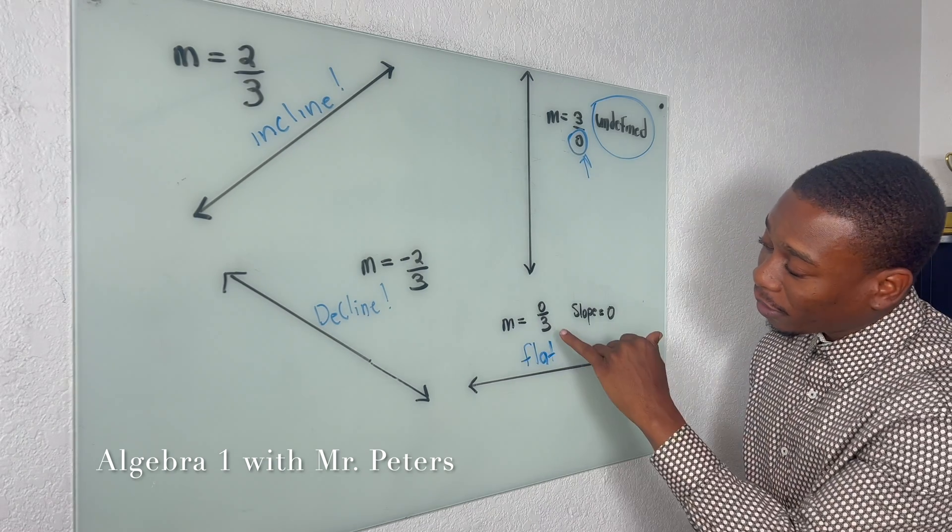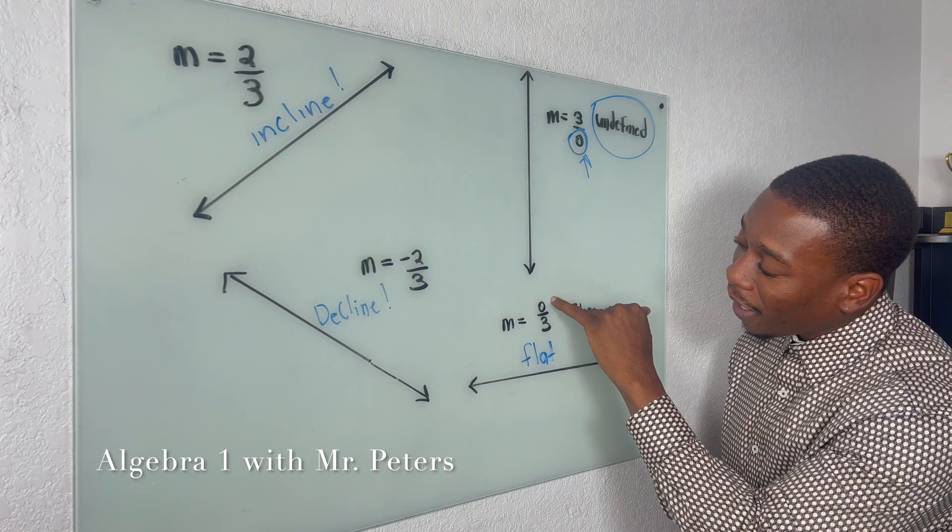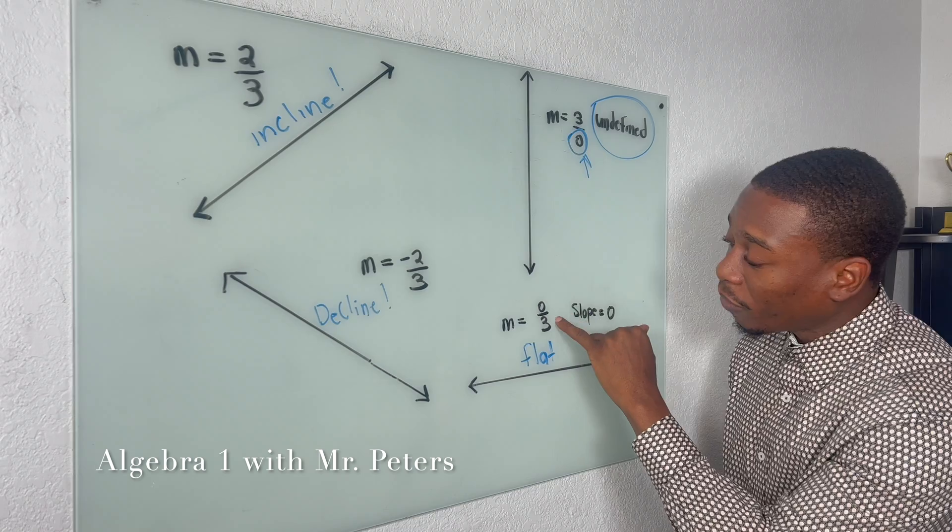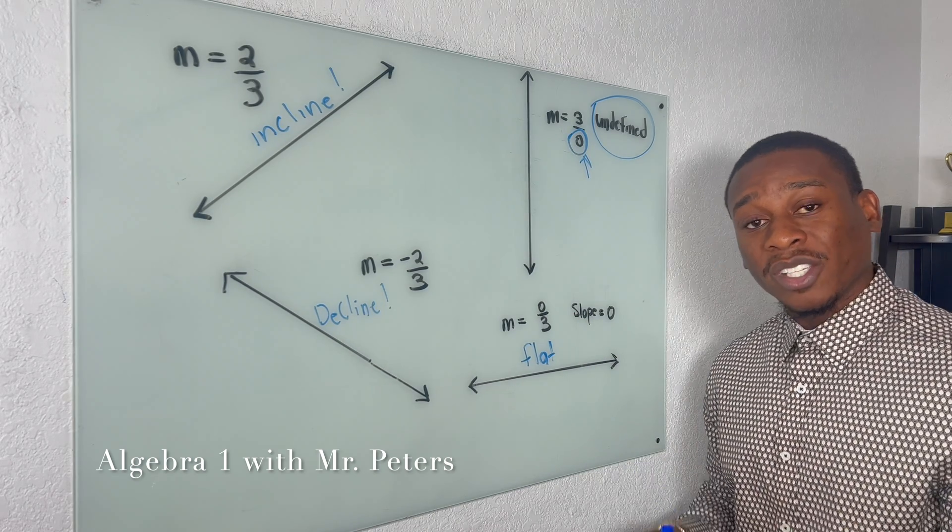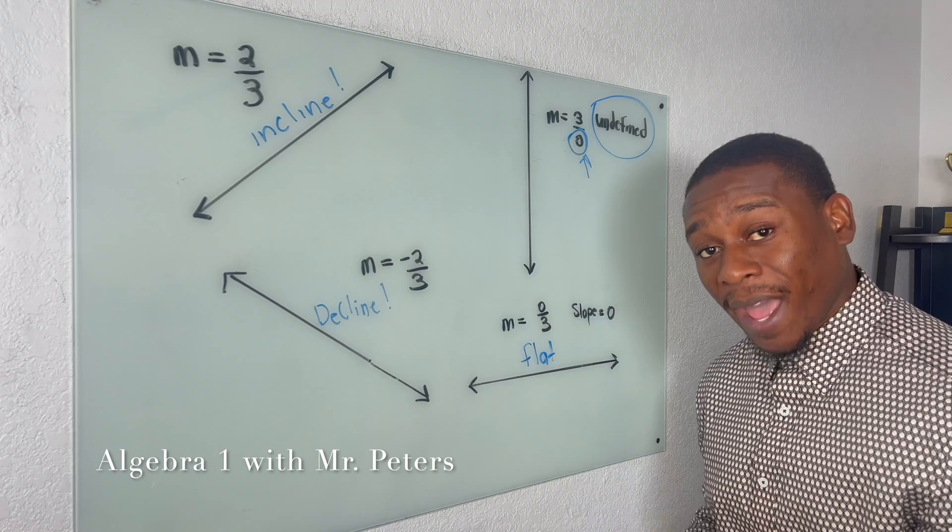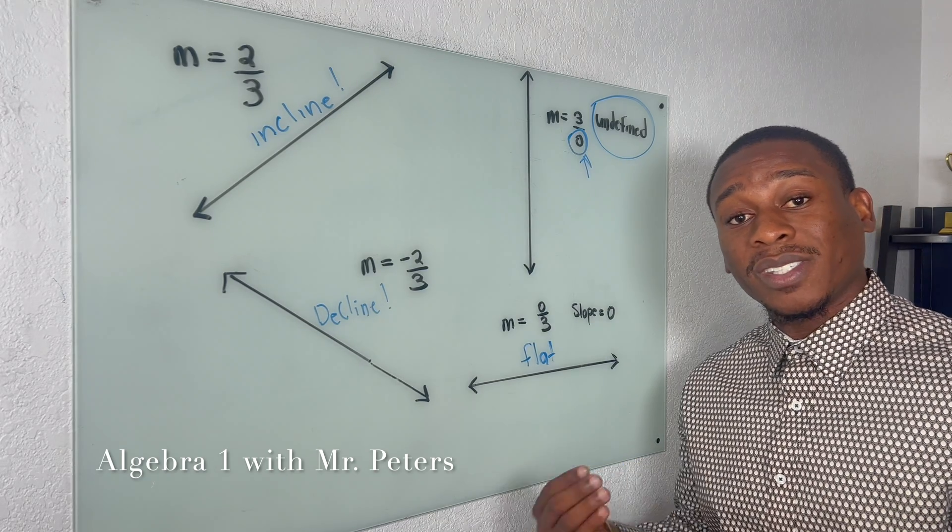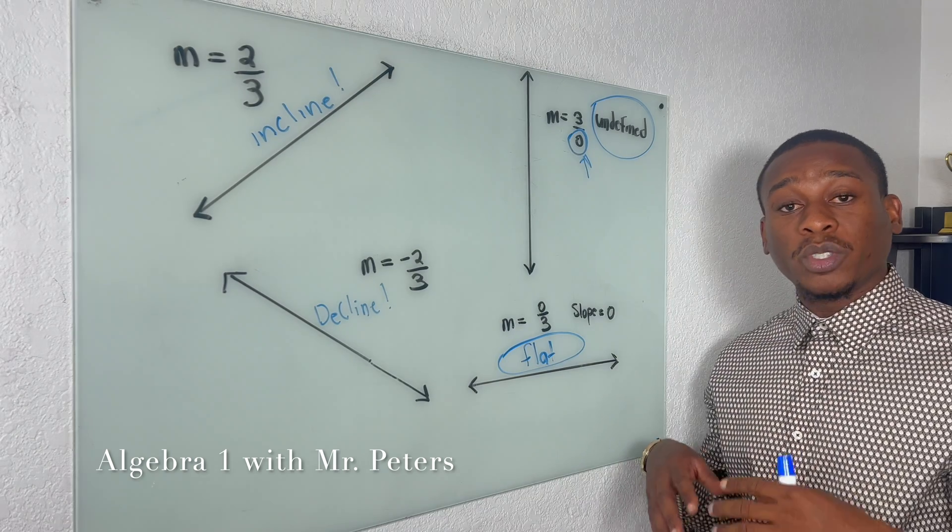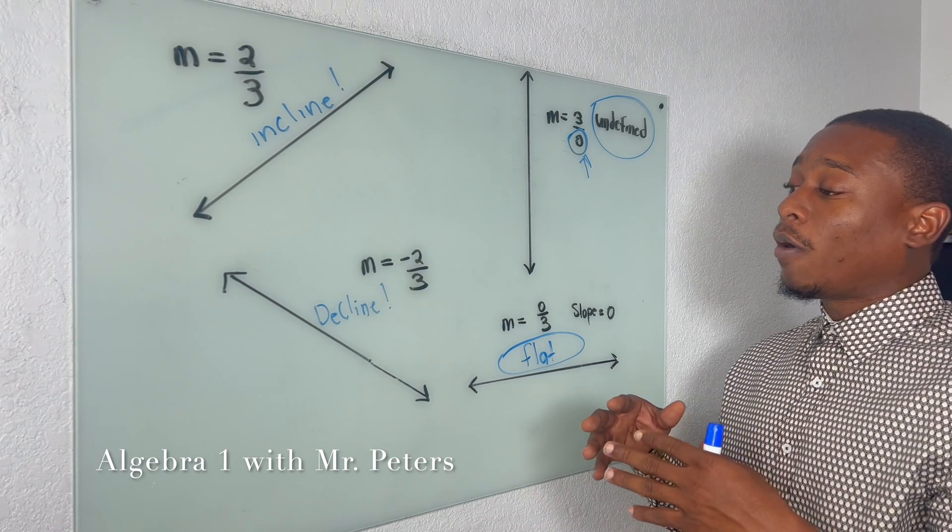Now problem number four, we have a slope, the slope is zero because when we divide a number by zero, right, zero divided by three, we're always going to get zero. So we do have a value, we do have a slope, it's just zero.